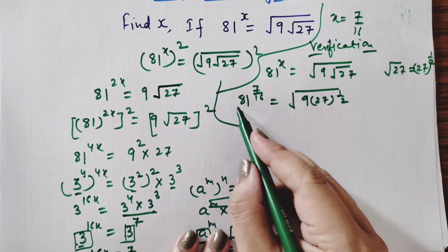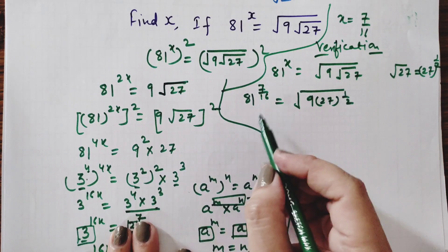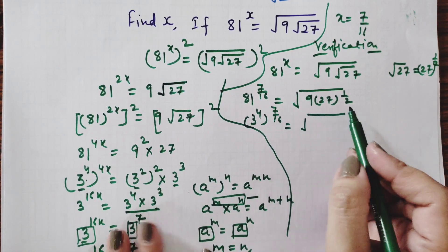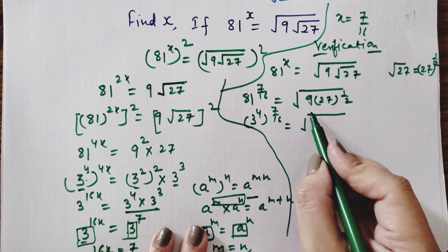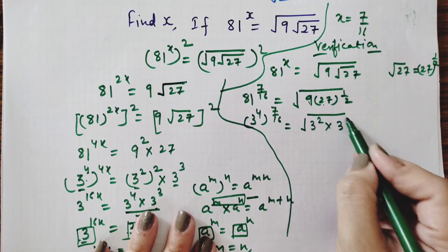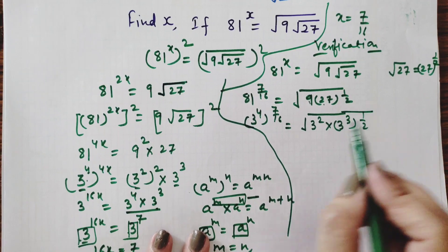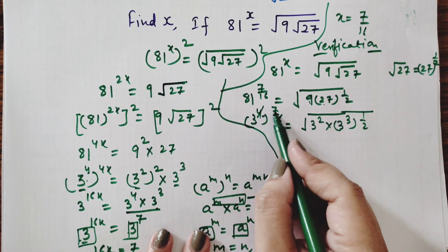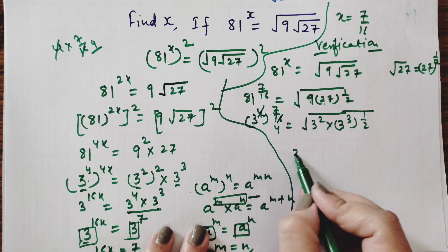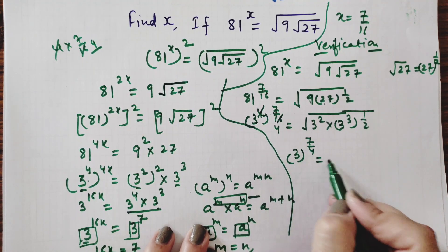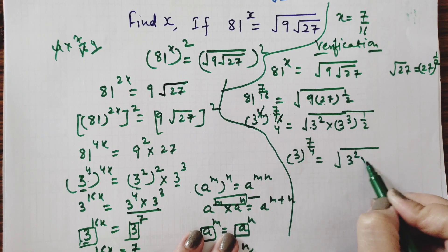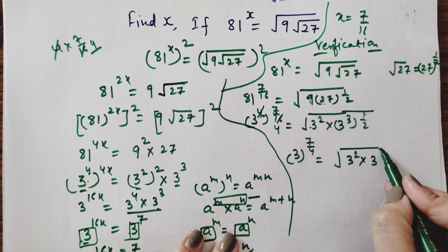After that, for 81 we write 3 power 4, with power 7 by 16. On the right-hand side, we convert 9 into terms of 3: that is 3 squared. And 27 we convert into terms of 3: that is 3 cubed, power 1 by 2. Now applying power-to-power multiplication: 4 × (7/16) — the 4 cancels with 16 four times — so on the left-hand side we get 3 power 7 by 4. For the right-hand side, 3 squared remains, and 3 cubed power 1 by 2 gives 3 power 3 by 2.